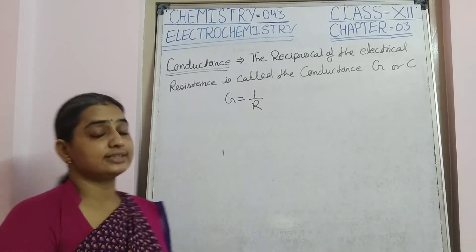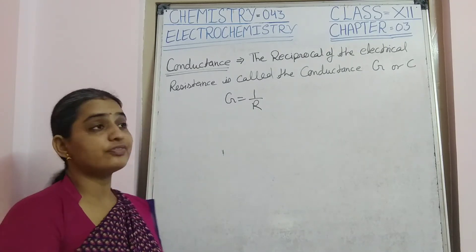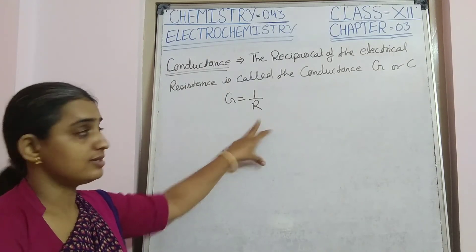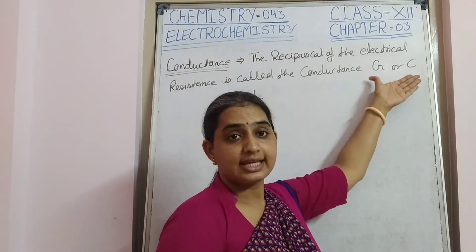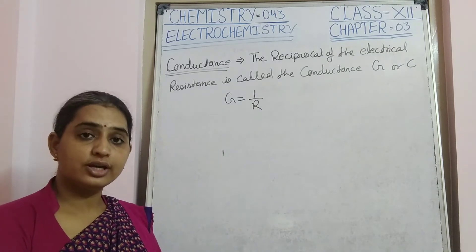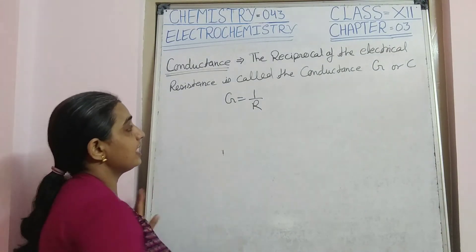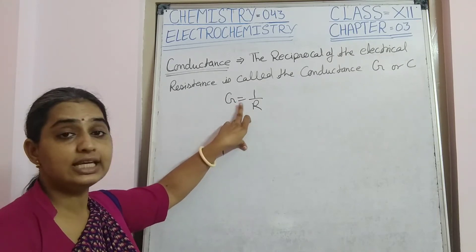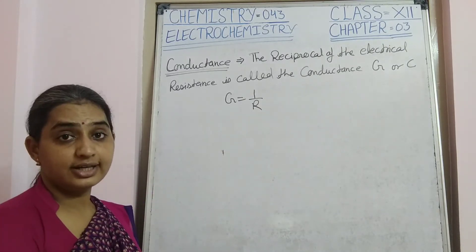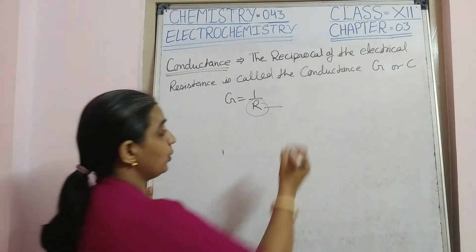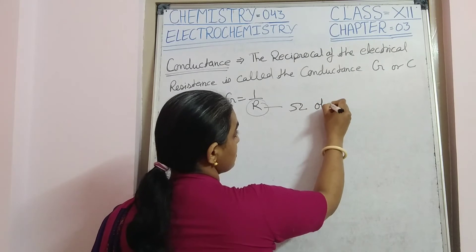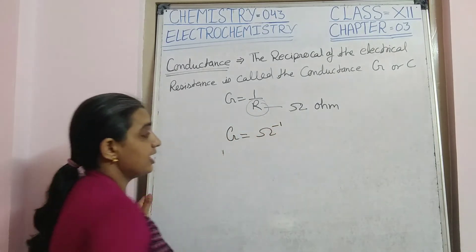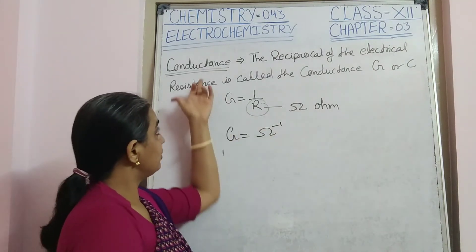The next topic is conductance. Conductance is the reciprocal of electrical resistance and is denoted by G. That is, G = 1/R. The SI unit of conductance is ohm inverse (Ω⁻¹).